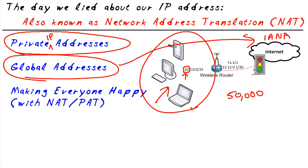So if a customer needs an IP address, like this router right here, the customer can connect through the service provider and be assigned an IP address via PPPoE, via DHCP, or statically assigned — and this is a global address. So the router can talk on the internet, no problem. The internet knows how to get back to that IP address.